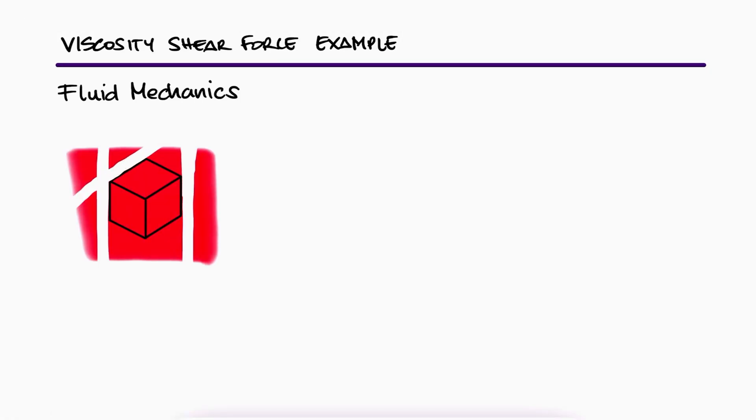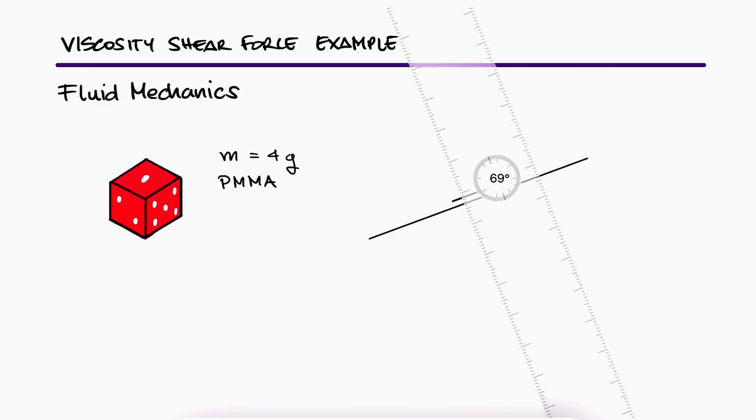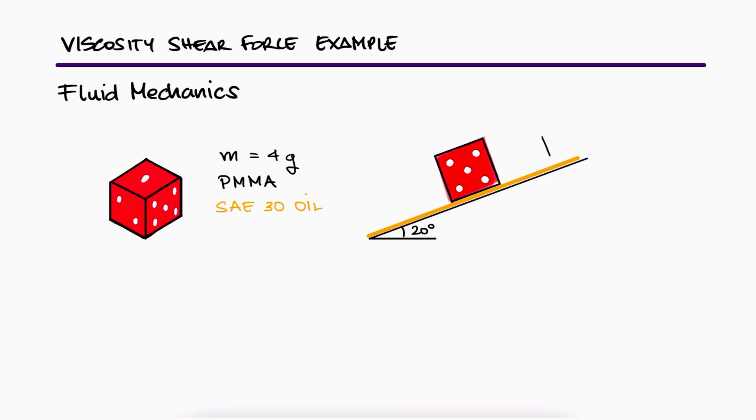A 4-gram polymethylmethacrylate dice slides down a 20-degree inclined plane on a thin film of SAE-30 oil. Assuming a linear velocity distribution in the 1-millimeter thick film, what is the terminal velocity of the dice?